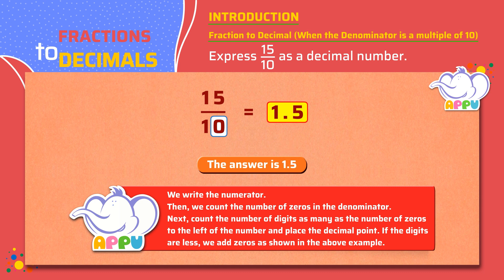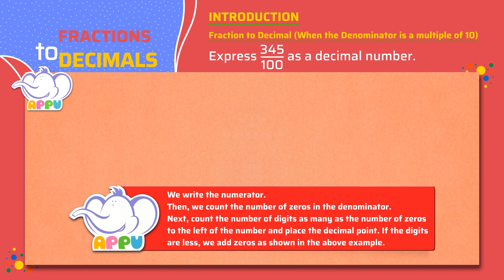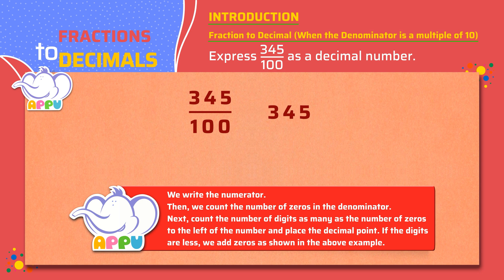Let's look at converting a fraction with 100 as a denominator to a decimal number. For example, express 345 by 100 as a decimal number. We write the numerator — that is 345. We count the number of zeros in the denominator — that is we have two zeros. Now we count two digits to the left of the number and place the decimal point, that is before 4. So the answer is 3.45.